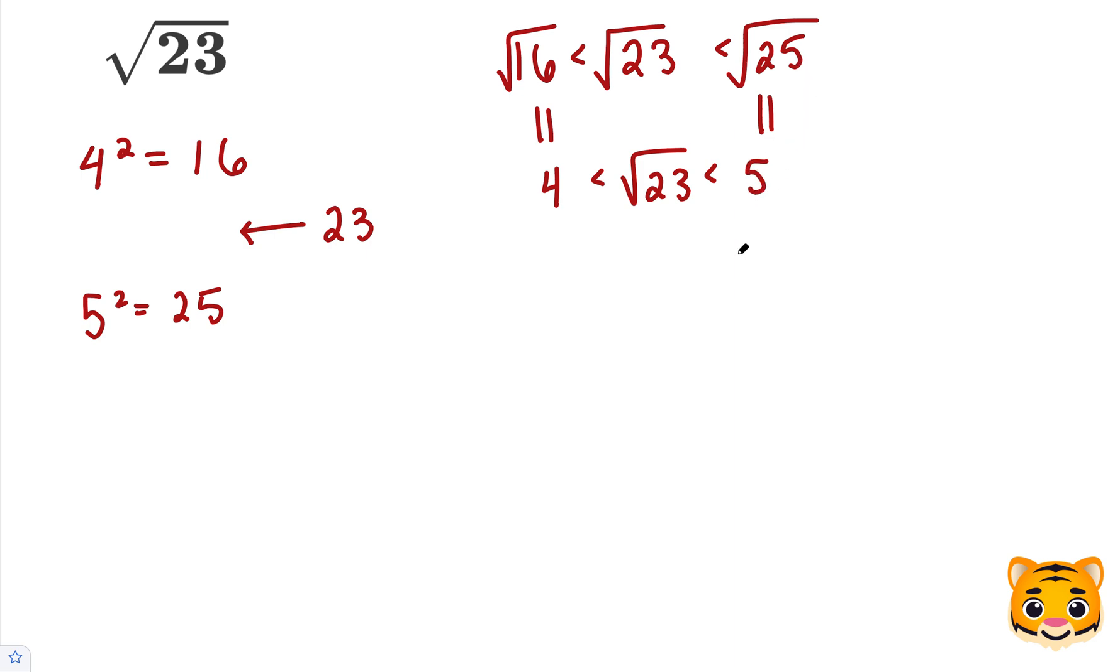Now we have the following inequality: 4 is less than root 23, which is less than 5. So we can see that the square root of 23 is between 4 and 5.